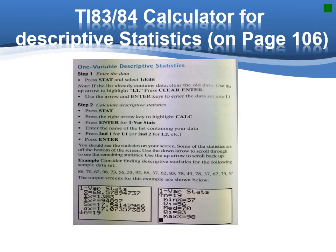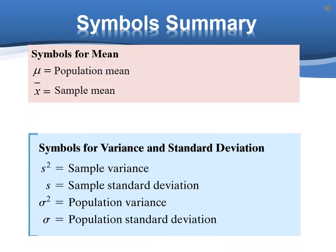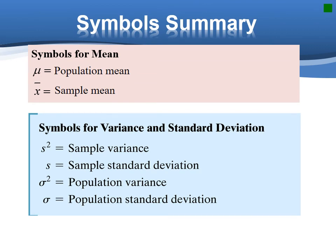Now, you can practice using the calculator. Instructions are on page 106 in our textbook, and also, you can find it on Canvas. Now, I give you the simple summary. Mu is the population mean. X bar is the sample mean. S squared denotes the sample variance, and S denotes the sample standard deviation. Sigma squared denotes the population variance, and sigma denotes the population standard deviation.